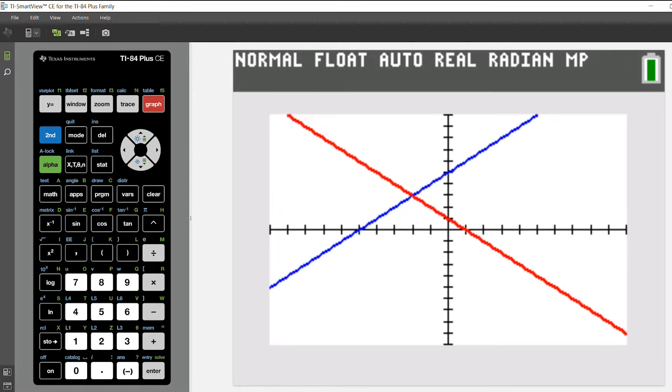Make sure you can see your point of intersection, which I have already adjusted my window so that I can see it. And then you'll go to second trace.